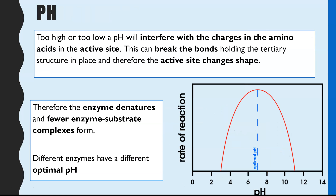pH is our second condition. If you have too high or too low a pH, the enzyme will denature. If the pH is too high, you have too many hydrogen ions; if it's too low, you have too many OH minus ions. Both of those, because they have either a positive or negative charge, interfere with the charges in the amino acids within the active site, and the bonds holding those amino acids together in their 3D shape will break.